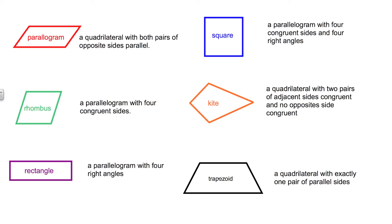Finally, we have here in black a trapezoid. It is a quadrilateral with exactly one pair of parallel sides. The top and the bottom are the parallel sides and the left and the right are the non-parallel sides. This particular trapezoid is a special kind called an isosceles trapezoid where the two legs, or the non-parallel sides, are congruent. They don't have to be isosceles to be considered a trapezoid.